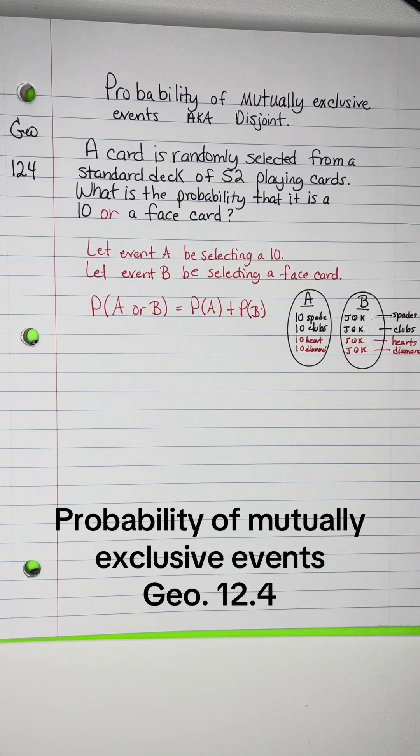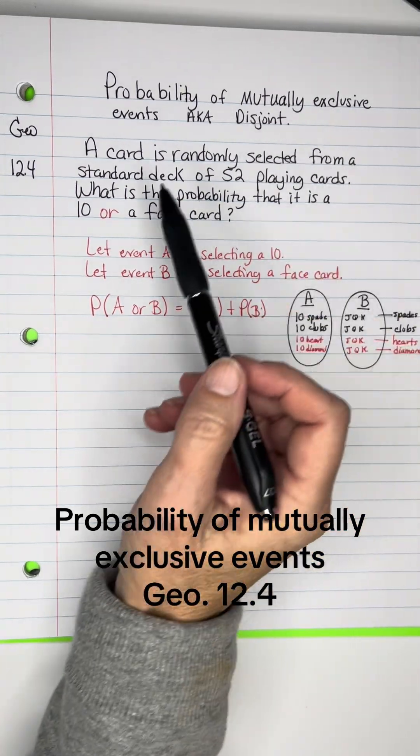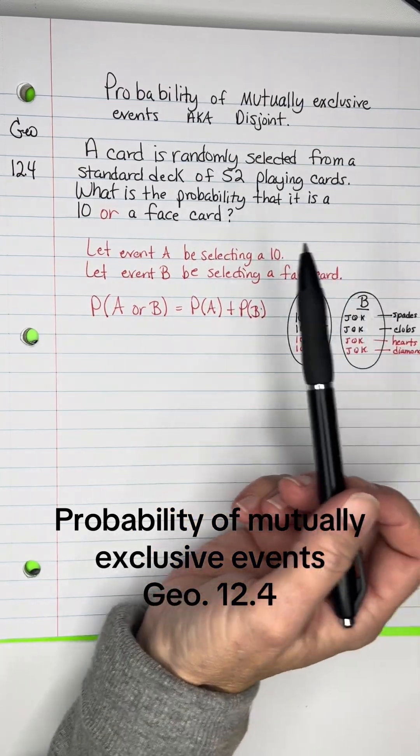Okay, I'm going to talk a minute about compound events, specifically in this one, mutually exclusive events, sometimes called disjoint events.